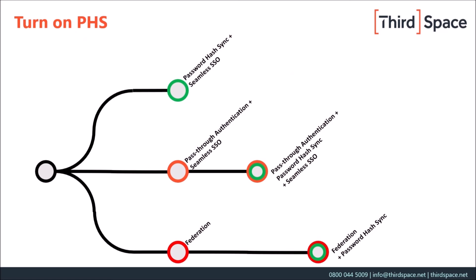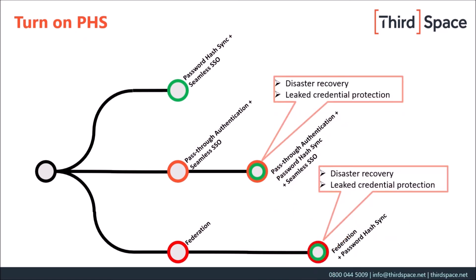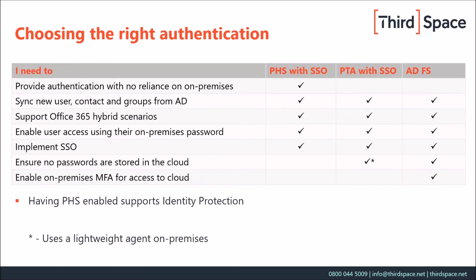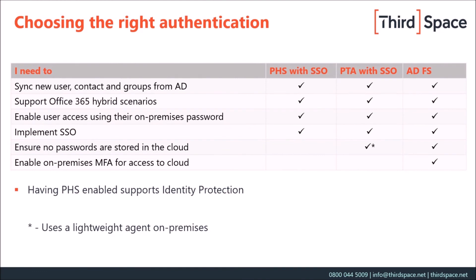Identity protection to work at its best requires not only the identities in the cloud, but also the password hashes. If we look at this as a matrix showing the various features available with the variety of different authentication methods, we can see there are a lot of similarities. However, password hash sync with seamless single sign-on is the only one that gives us authentication with no reliance at all on any on-premises hardware. If the AD Connect box goes down or you lose the connection to the internet, users will still be able to sign in to access all of their Azure-based services, Office 365 and other SaaS provisioned services. ADFS allows you to use third-party MFA providers linked to the ADFS box, should you wish to go that way.